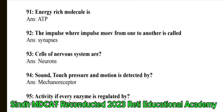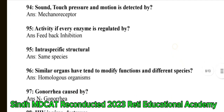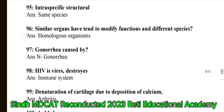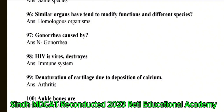Question 94: Sound, touch, pressure and motion is detected by mechanoreceptors. Question 95: Activity of every enzyme is regulated by feedback inhibition. Question 95: Intraspecific — the correct answer is same species. Question 96: Similar organs that tend to modify functions in different species — the correct answer is homologous organs. Question 97: Gonorrhea caused by Neisseria gonorrhoeae. Question 98: HIV is a virus that destroys the immune system. Question 99: Denaturation of cartilage due to deposition of calcium — the correct answer is arthritis.